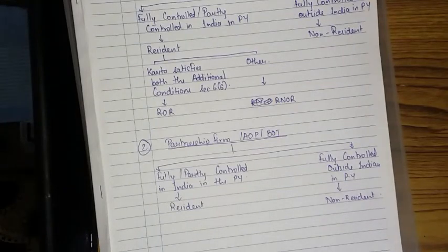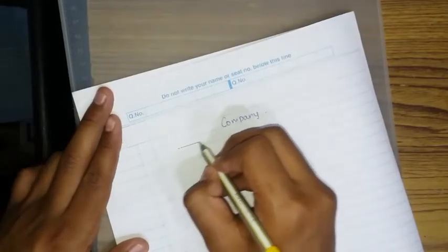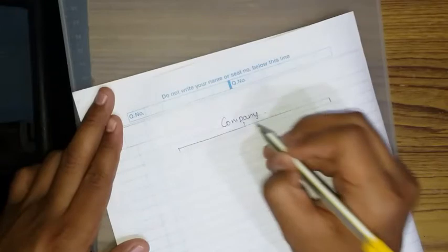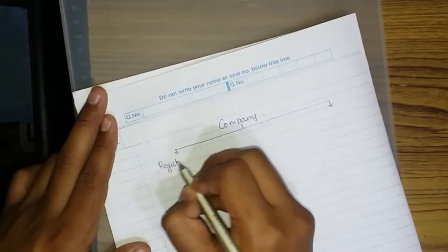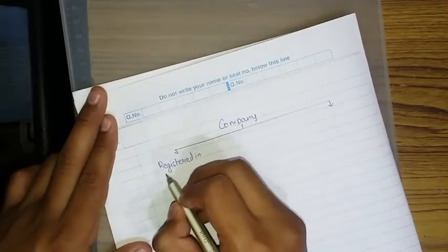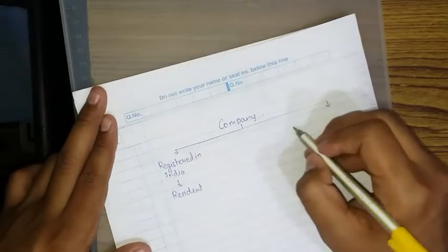Now we'll determine the residential status of a company. A company is an artificial person. If the company is registered in India, then it is a resident.